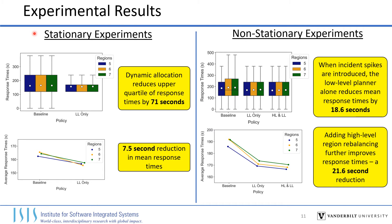In our stationary experiments, we only evaluate the low-level planner, since there are no shifts in incident distribution that would cause the high-level planner to change the region allocations. We found that dynamic allocation reduced response times by 7.5 seconds on average. Importantly, it also greatly reduced the variance in response times, meaning that there were far fewer incidents that had to wait a long time for a responder. The risk of negative outcomes exponentially increases with response delay, so reducing this variance can reduce incident mortality.